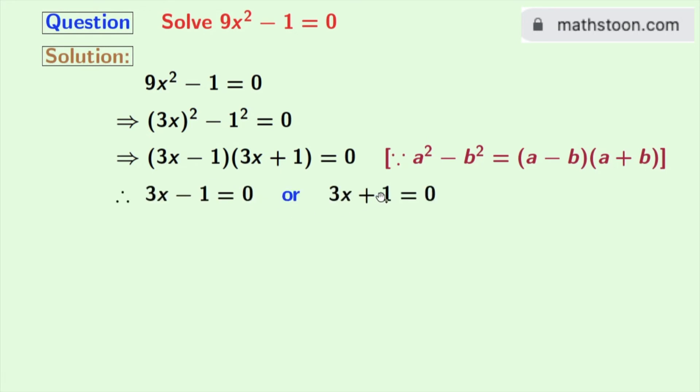If 3x - 1 = 0, then 3x = 1. And if 3x + 1 = 0, then 3x = -1.